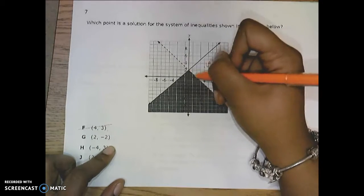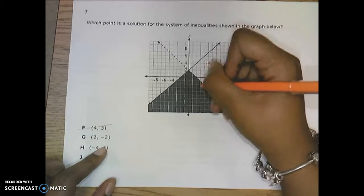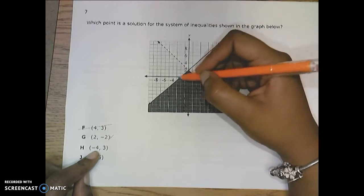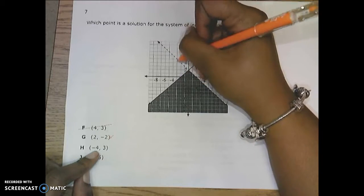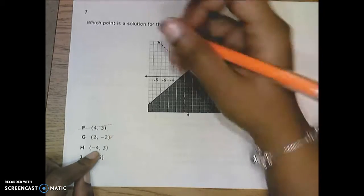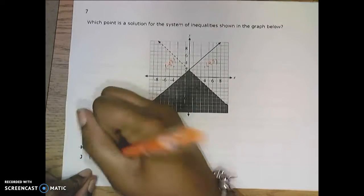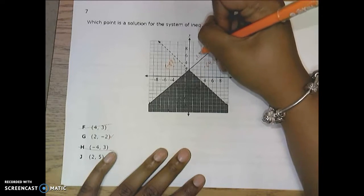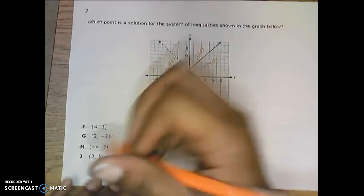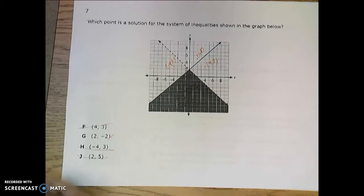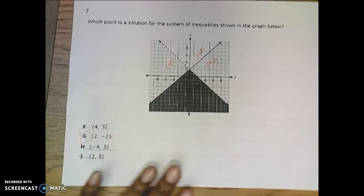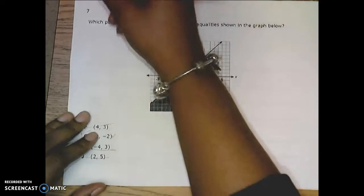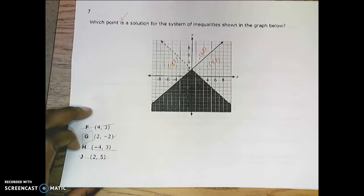2, negative 2, we go 2 to the right and down 2. In a shaded region, it's a solution. Negative 4, 3. Negative 4, positive 3 would be somewhere over here. Not a solution. Not in a shaded region. 2, 5. 2, up to 5. Not in a shaded region, not a solution. Your final answer is G. And just to double check which point is a solution to the system, we're looking for one that we'll check out, and that one works. So that's 7.